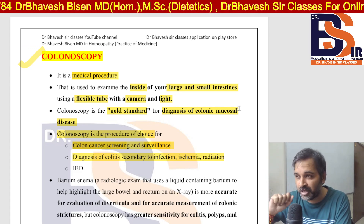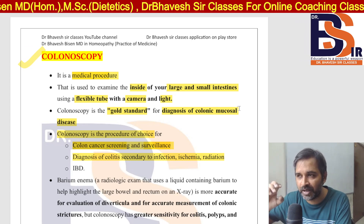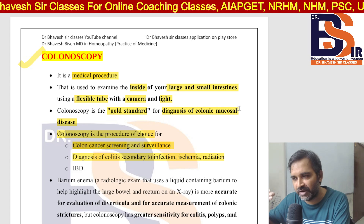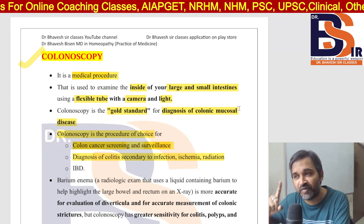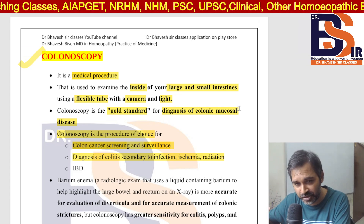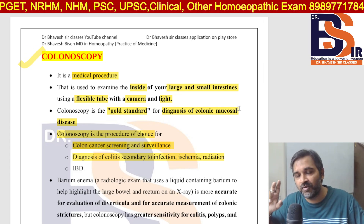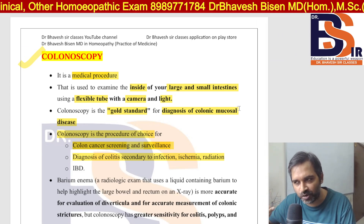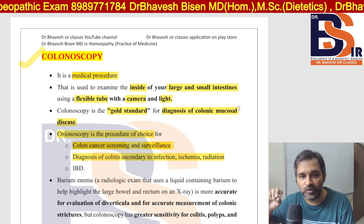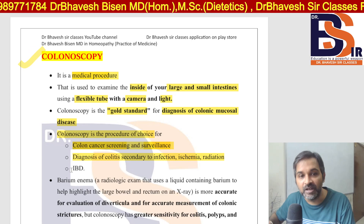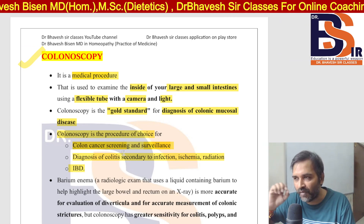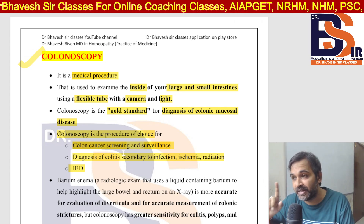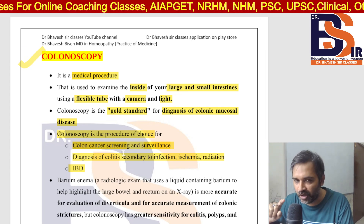If there is colitis due to infection, colonoscopy is required. Ischemic condition means blood supply to the colon is reduced — for example, if only 25% blood supply is occurring instead of the normal 100%, that is an ischemic condition. Colonoscopy is also used to diagnose problems caused by radiation and to identify inflammatory bowel disease (IBD) — inflammation in the bowel or colon.